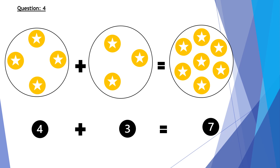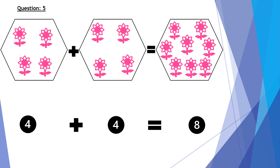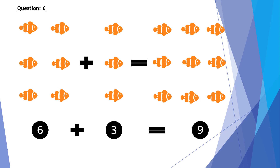Question number five: four flowers plus four flowers equals eight flowers. Question number six: six fishes plus three fishes equals nine fishes. So in the number form, six plus three equals nine.